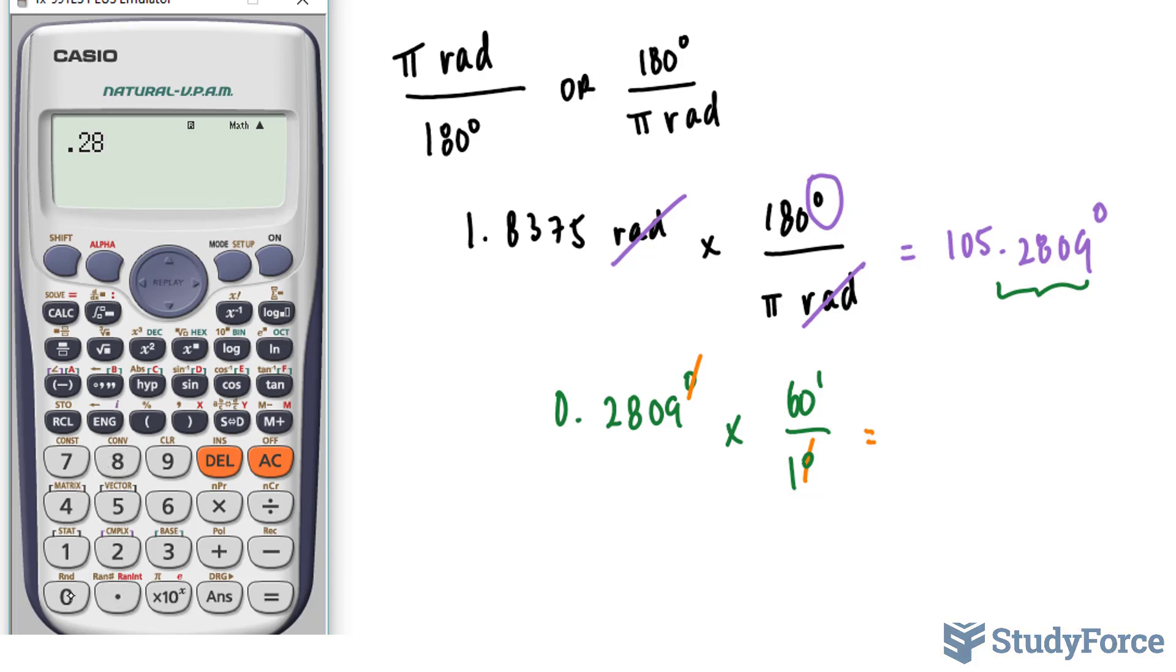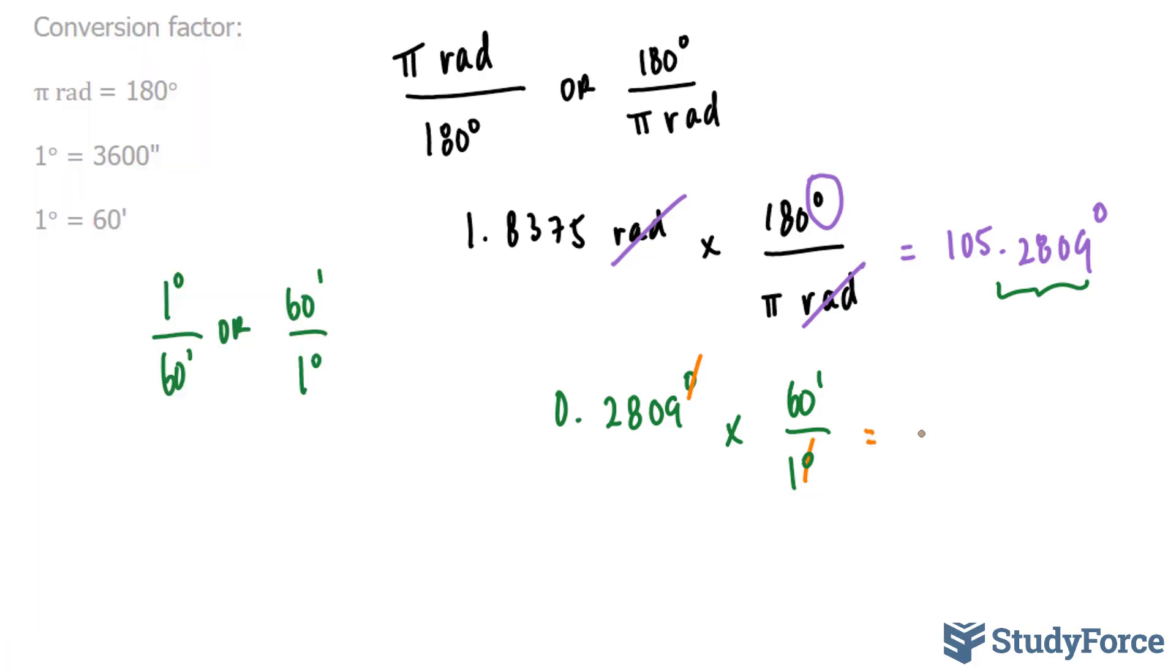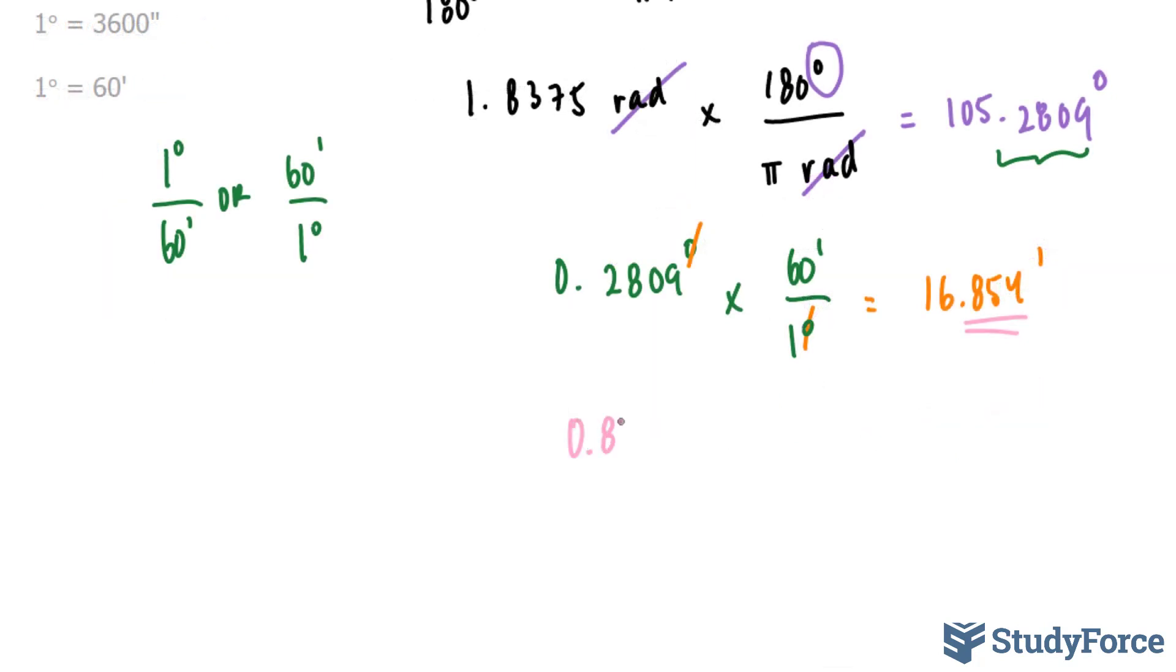0.2809 times 60 gives us 16.854 minutes. Now, to find the seconds, you will now need to use this part, 0.854 minutes.